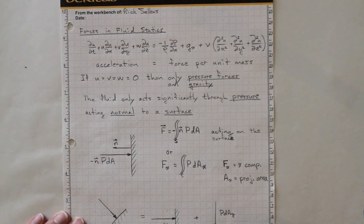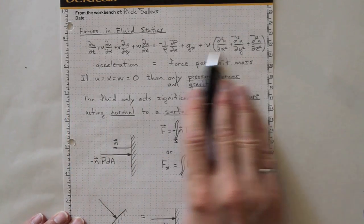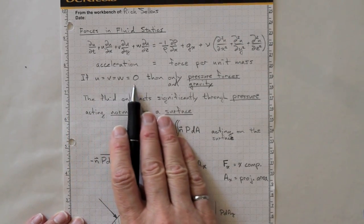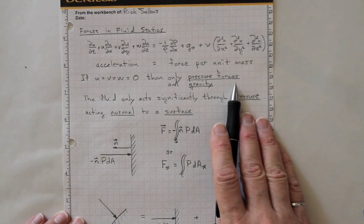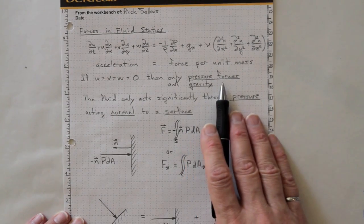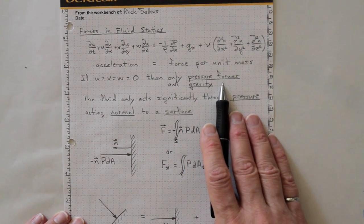Forces apply at all surfaces. And we can calculate the forces in fluid statics based on the Navier-Stokes equation, which if everything is equal to zero, we have only pressure forces and gravity. And delta P equals rho G delta H.